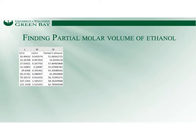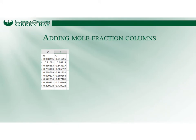Now you know how to calculate the partial molar volume of ethanol. In this case, everything is normalized with the number of moles of water instead. Again, the last value is also an outlier. You also need to create two columns: the mole fraction of water and the mole fraction of ethanol.